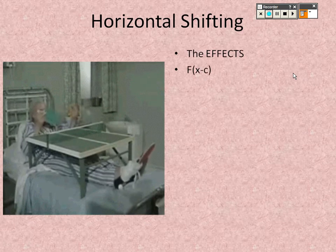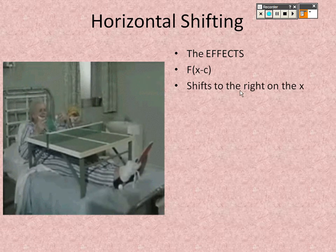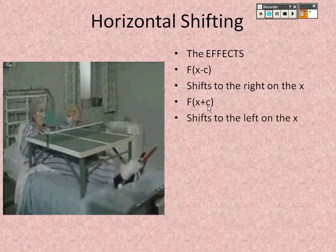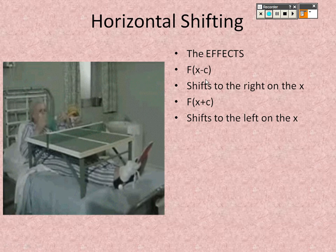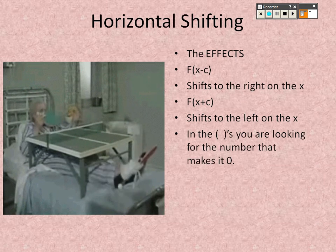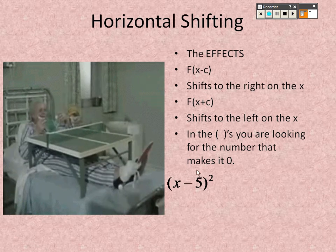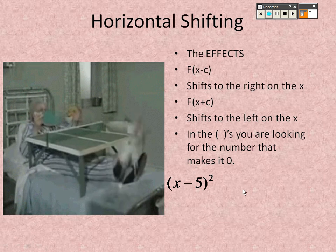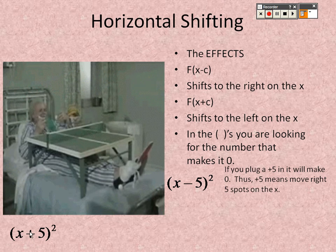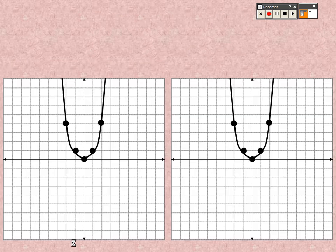For horizontal shifts, the number is inside the parenthesis. Think of it as opposites — it tells you which direction to move, and you take the opposite. Negative moves to the left, positive moves to the right. You're looking for the number that makes it zero. Positive 5 makes that zero, so you move it to the right 5. Negative 5 makes it zero, so you move it to the left 5 spots.